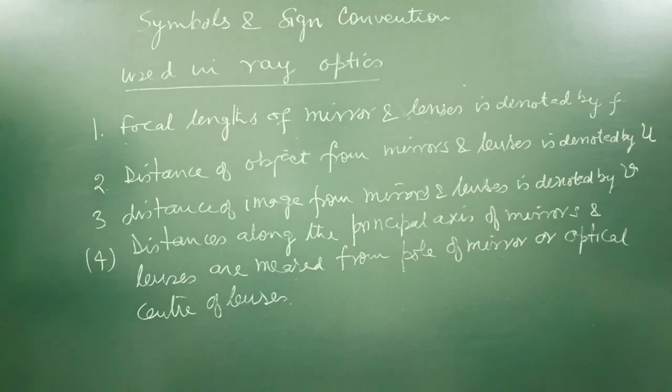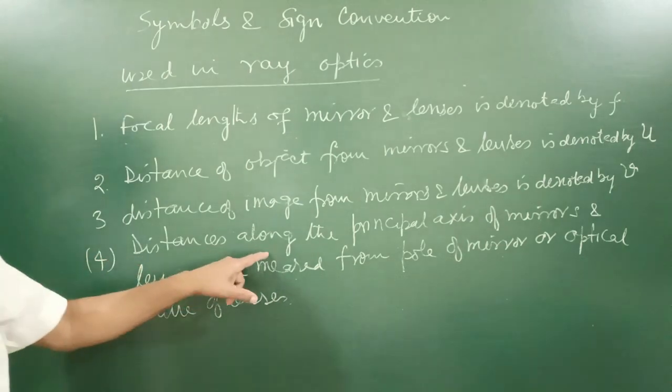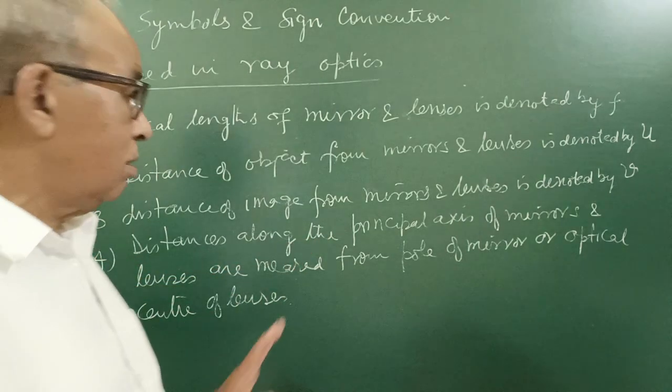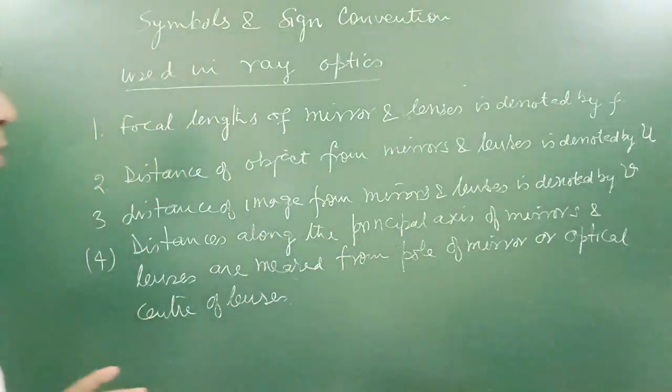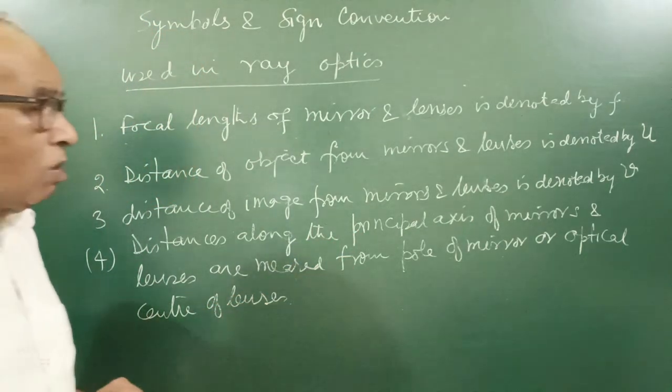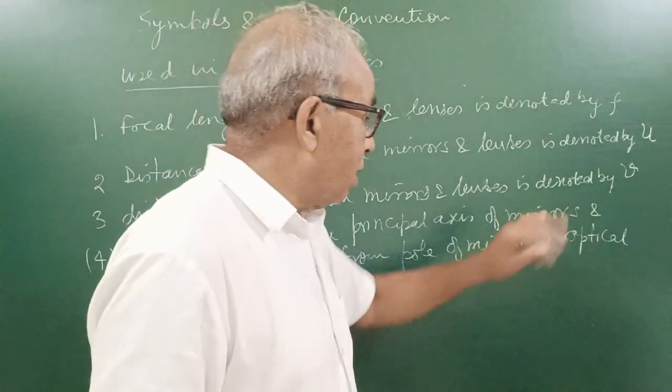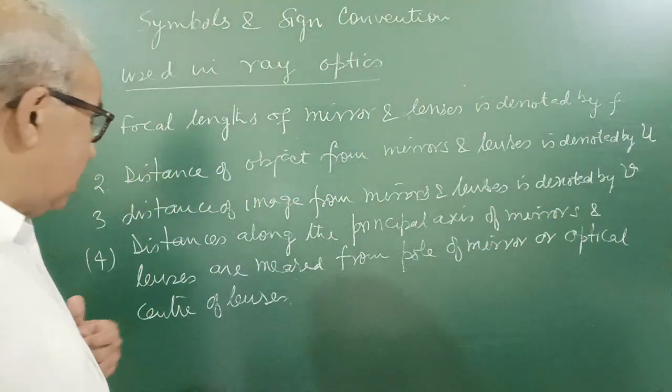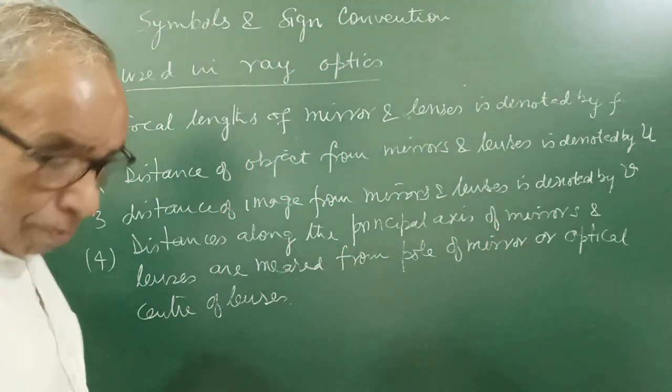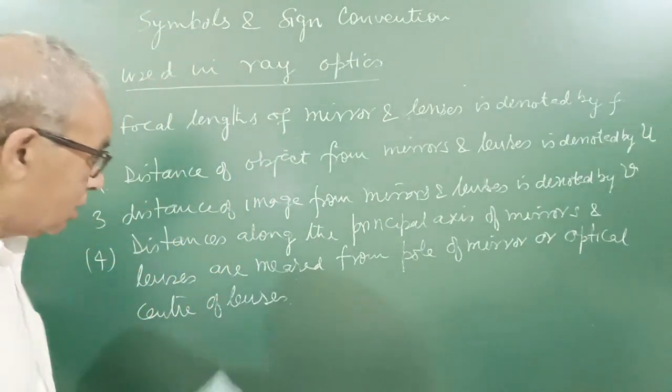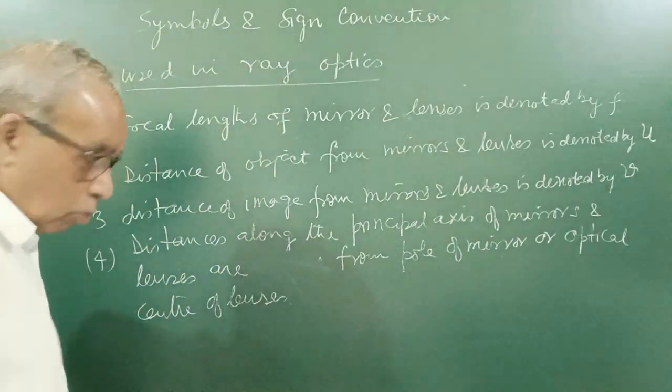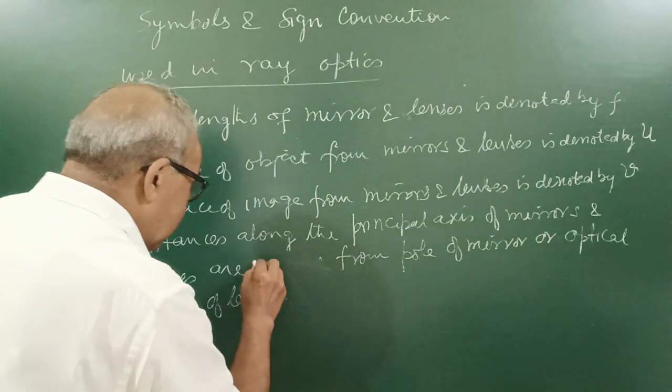Number four, the important topic here. Distance along the principal axis. Distance along the principal axis of mirror and lenses are measured from optical center lens. It is not measured here, sorry.